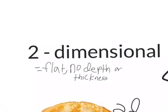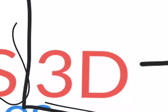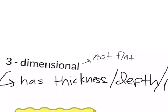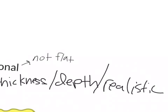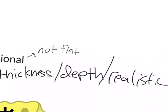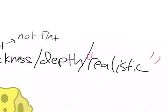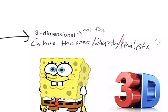So as we know, a 2D shape is flat, no depth or thickness. Well, 3D shapes, or 3D, are the exact opposite. It's basically it's not flat, and it has thickness, slash depth. And you could describe it as being realistic. Well, not exactly realistic. I mean, it kind of is, but not exactly.